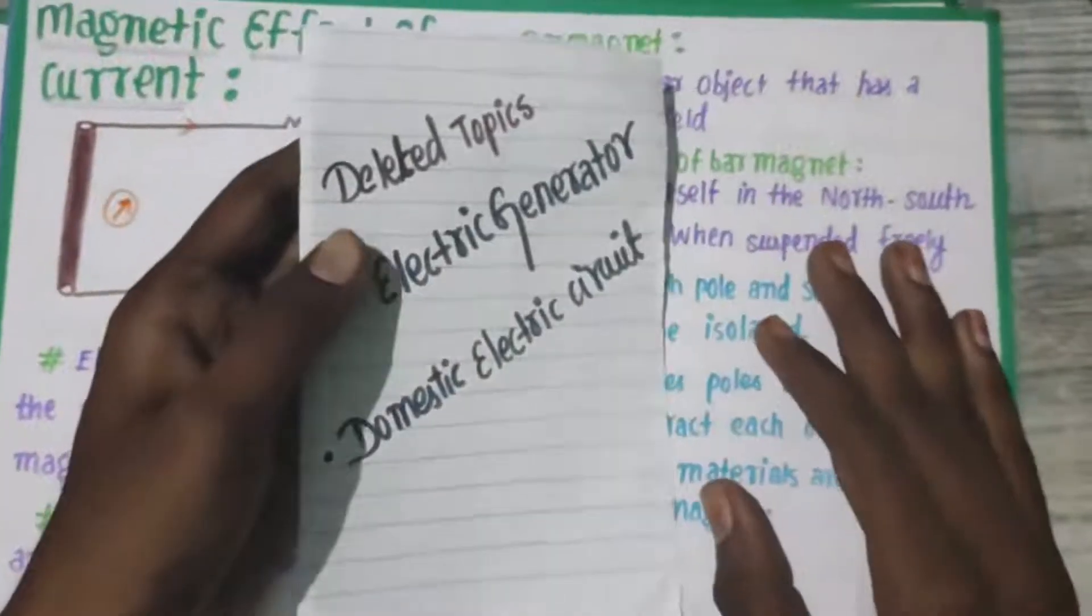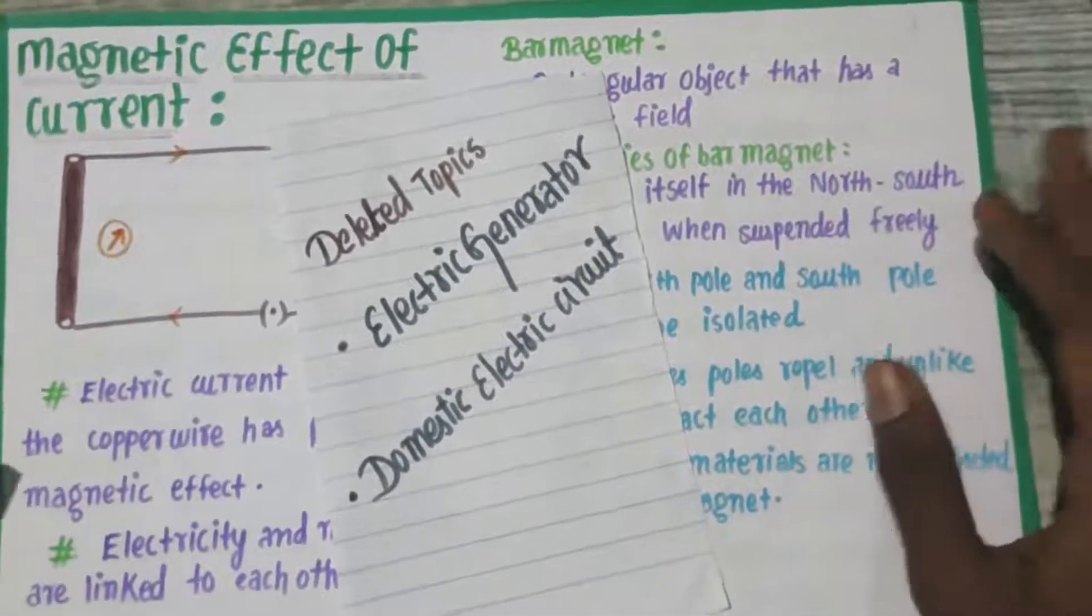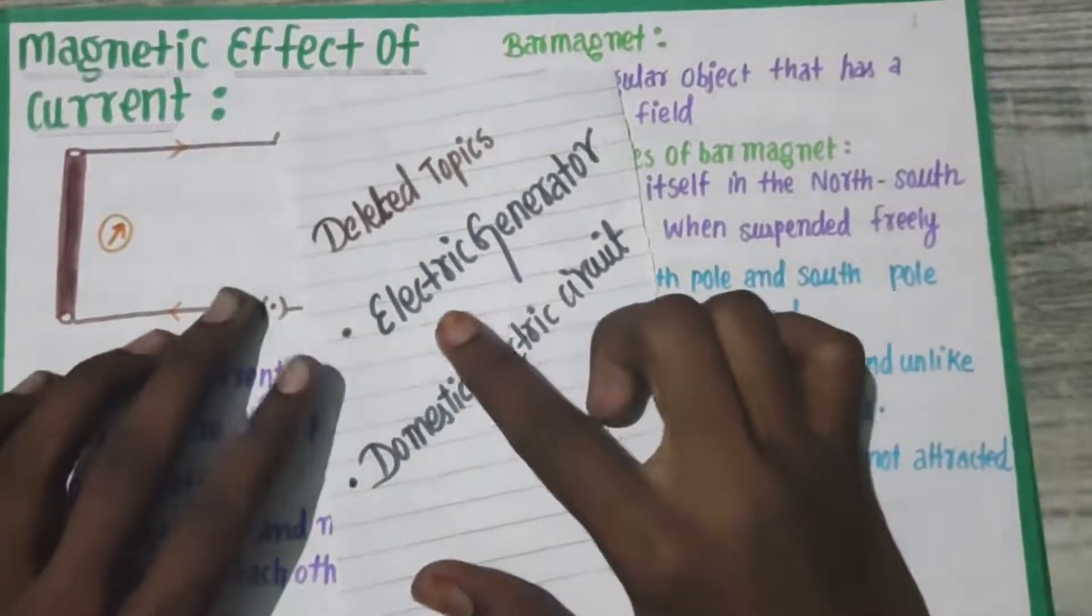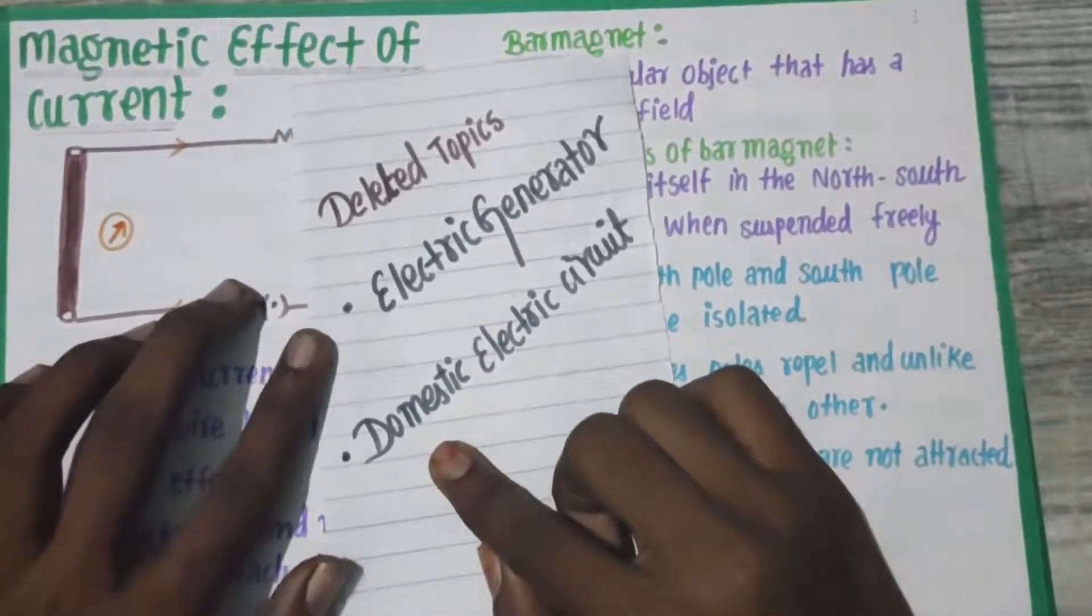Welcome to Shrifto. Now, let me explain the deleted topics of this chapter. The magnetic effect of electric current has two deleted topics: one is the electric generator, and domestic electric circuit.